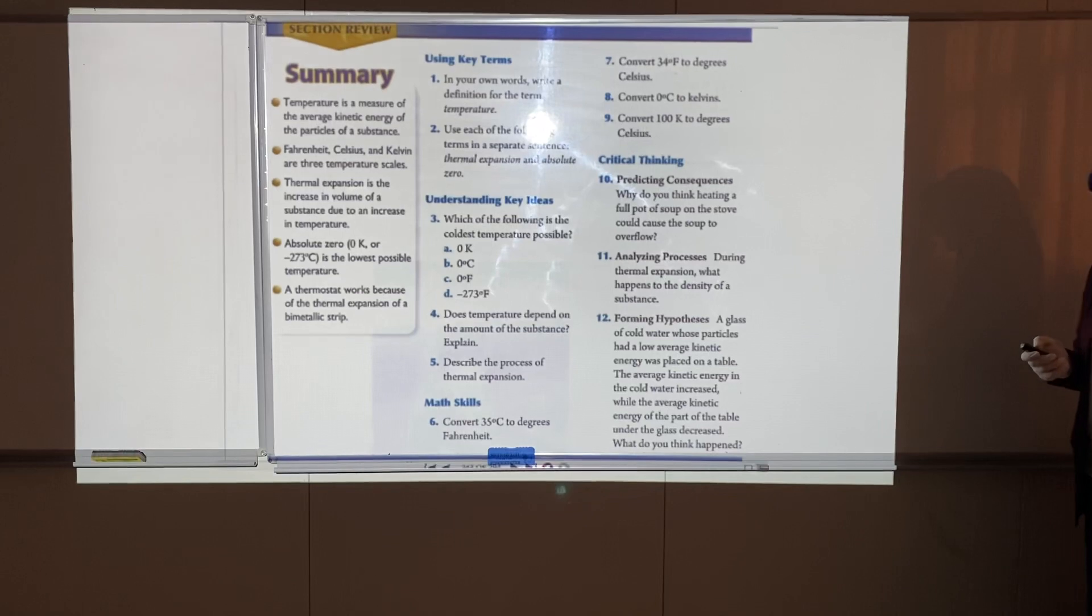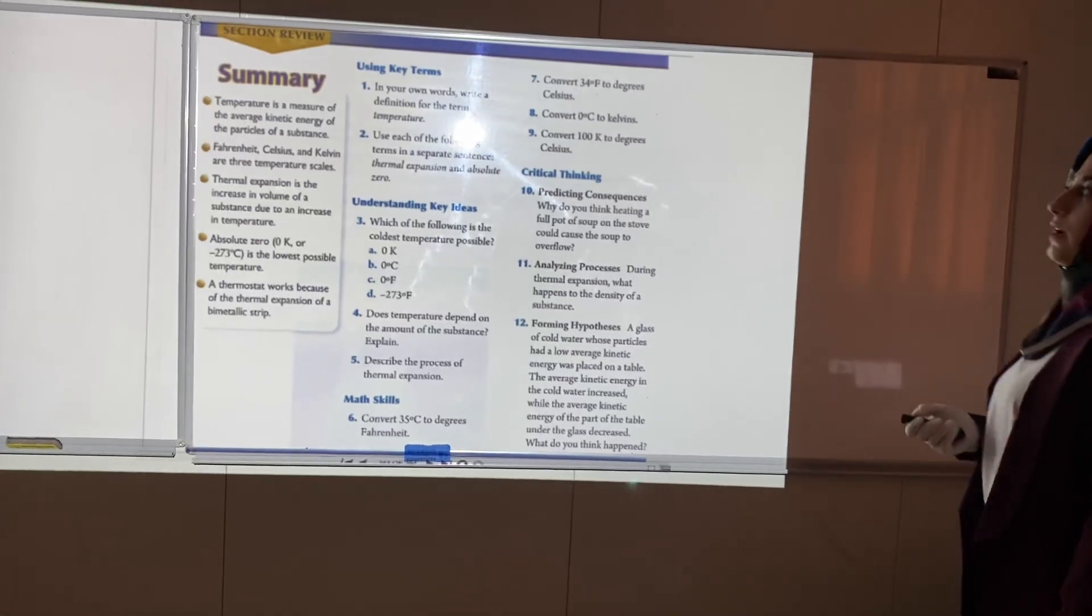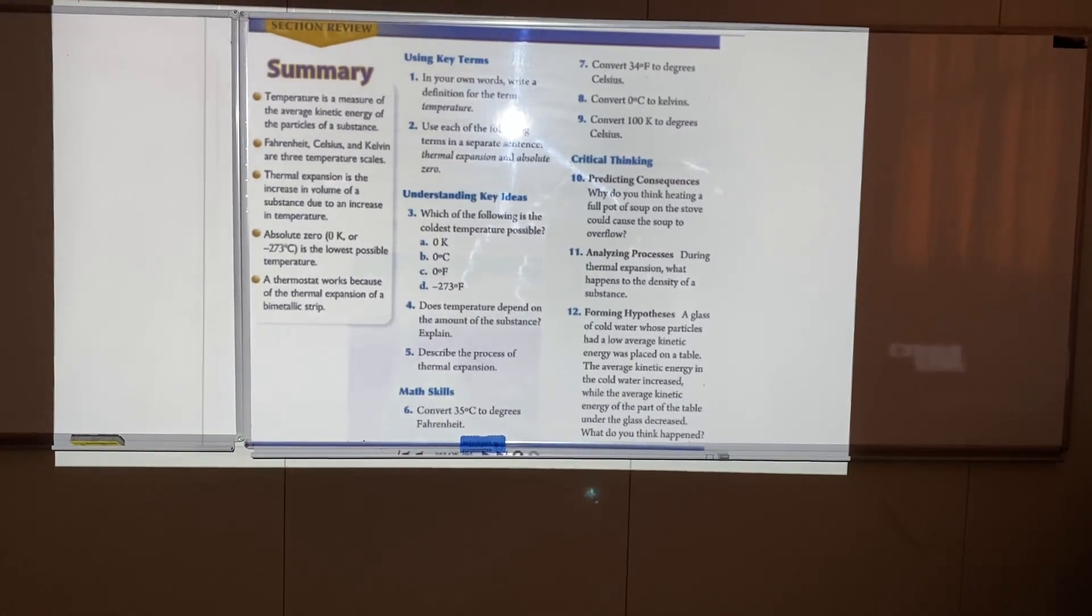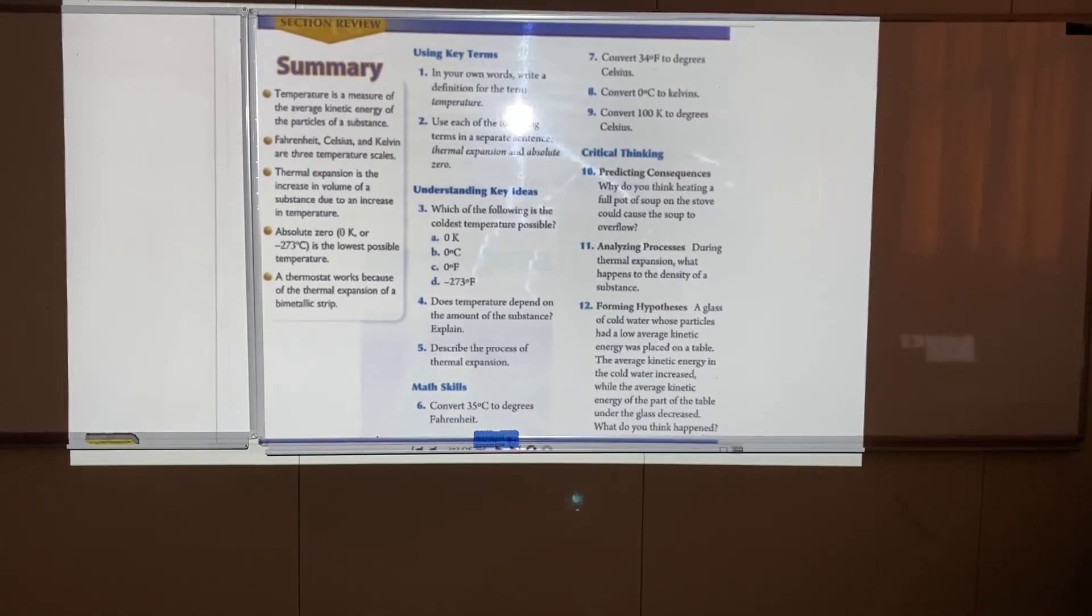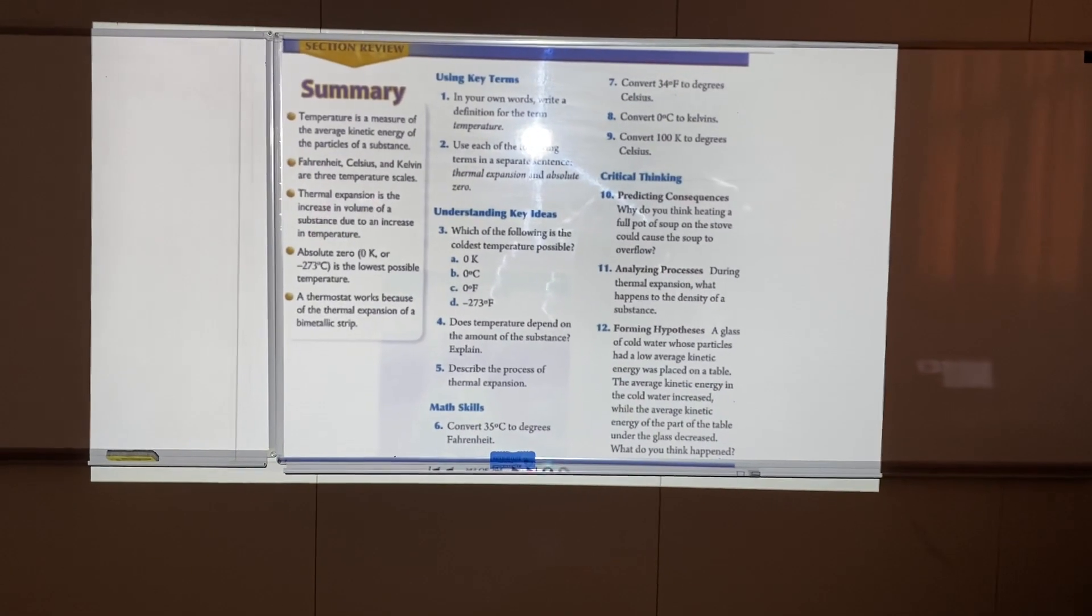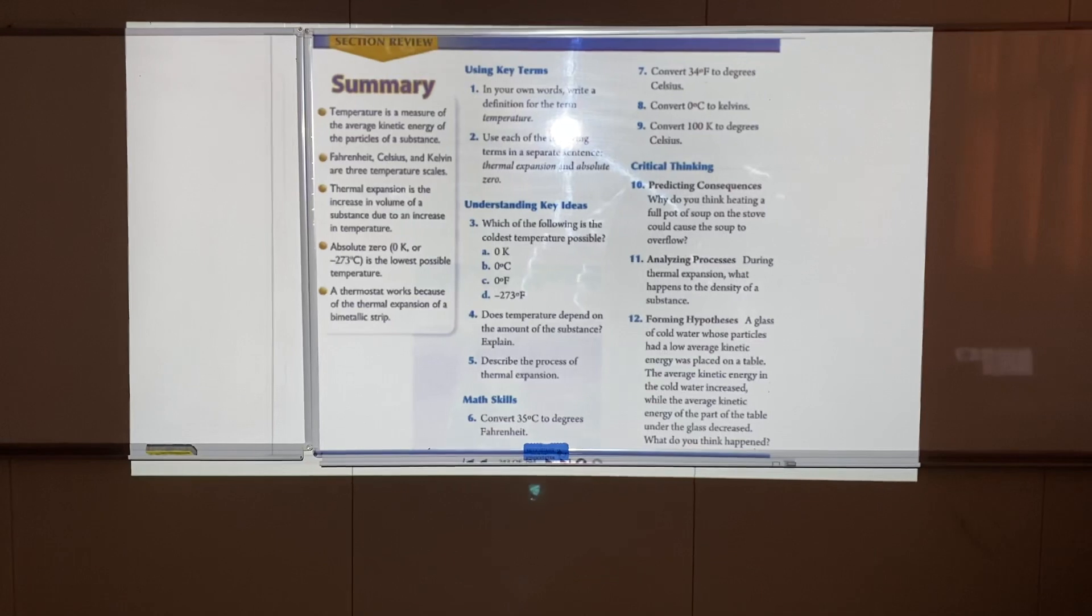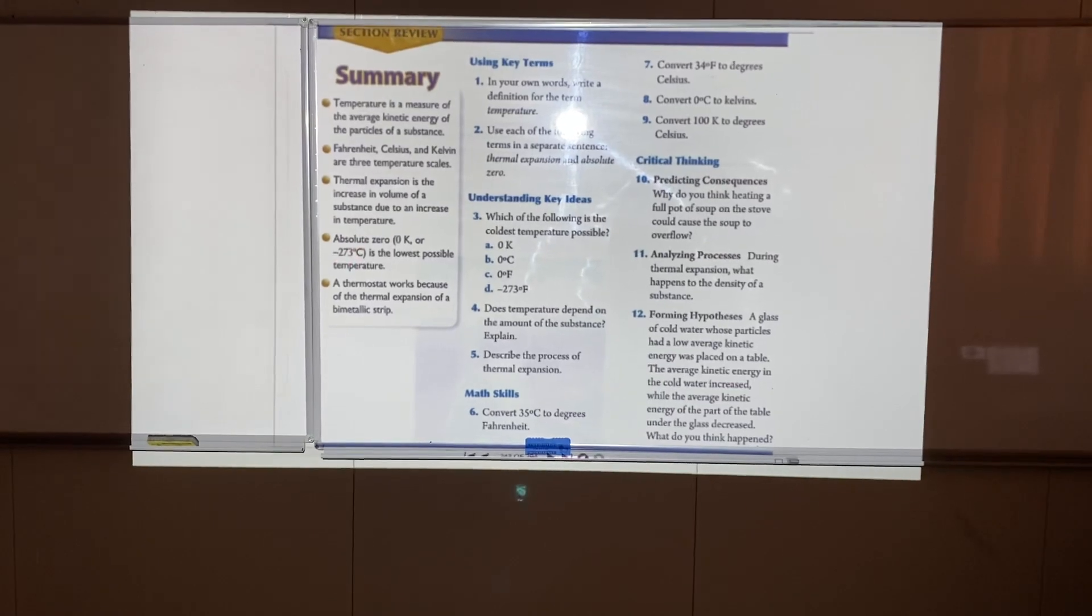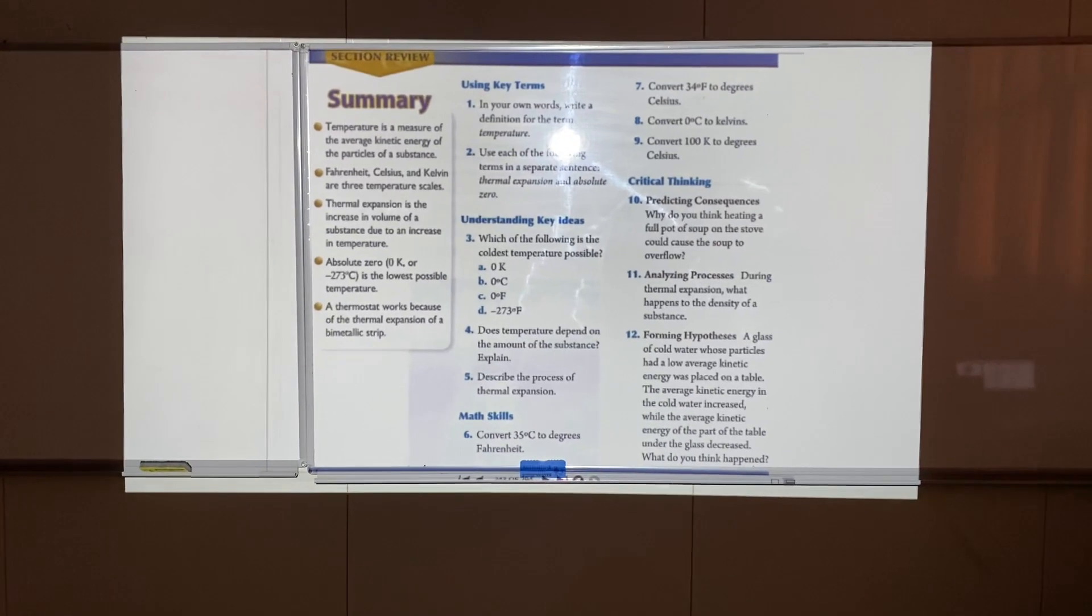As a summary, we learned that temperature is a measure of the average kinetic energy of particles in a substance. Fahrenheit, Celsius, and Kelvin are three temperature scales we use. The most common scale is Celsius, but some countries like the UK use Fahrenheit. Thermal expansion is the increase in volume of a substance due to increase in temperature. Absolute zero is zero Kelvin or minus 273 degrees Celsius, the lowest possible temperature.